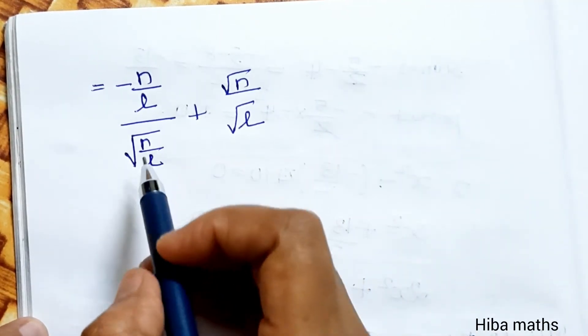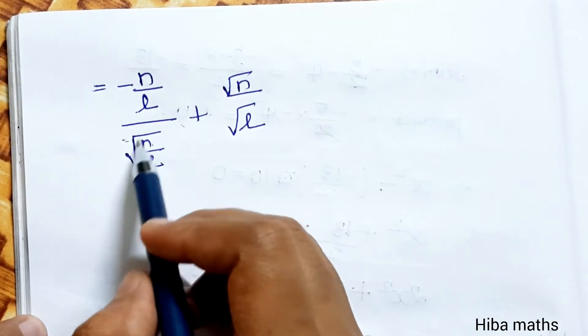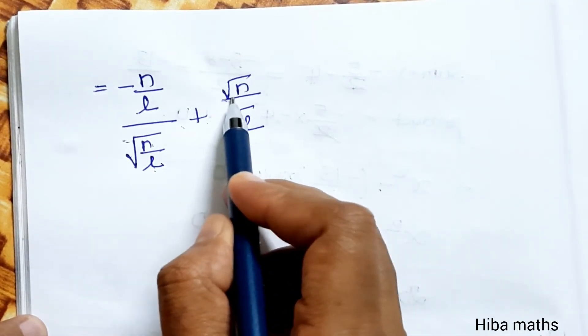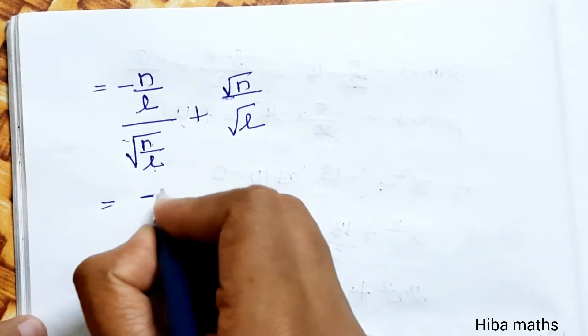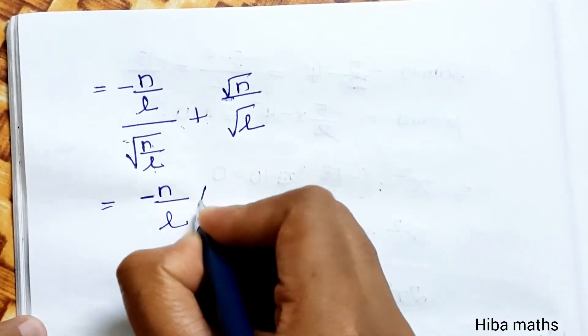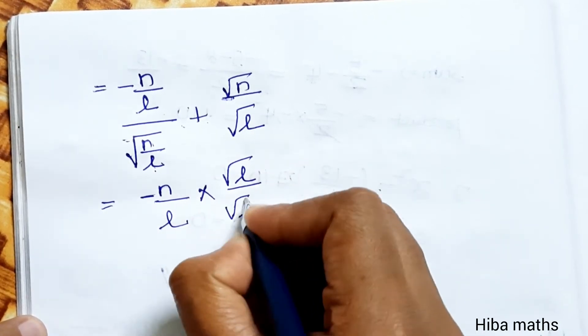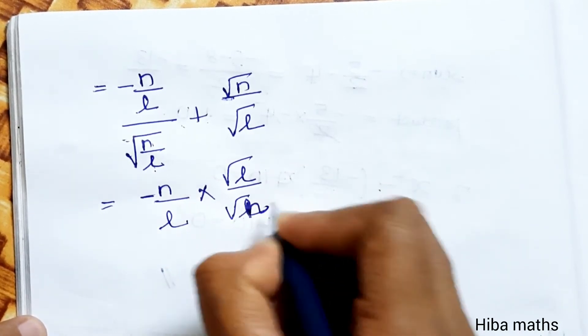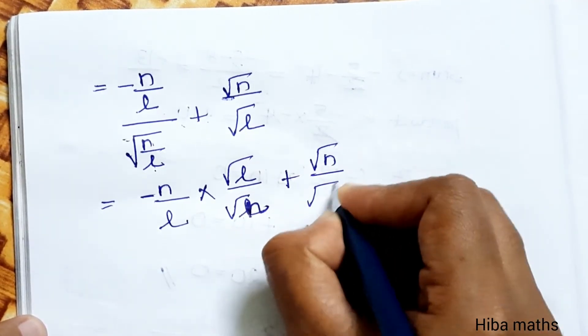Substitute: √(-n/l) divided by √(n/l) plus √(n/l). √(n/l) = -√(n/l) times reciprocal, √l divided by √n plus √(n/l).